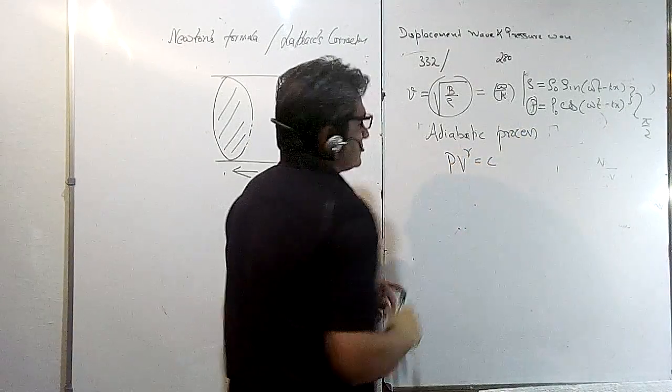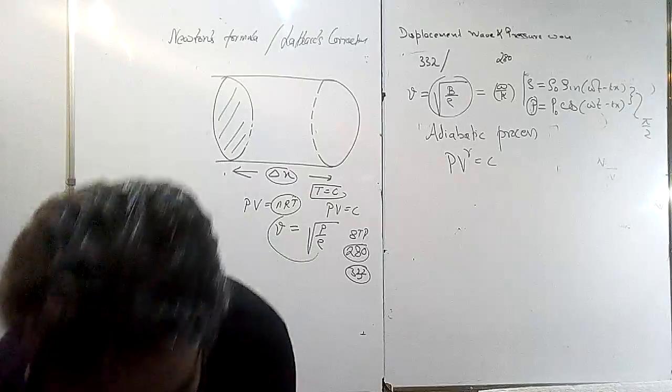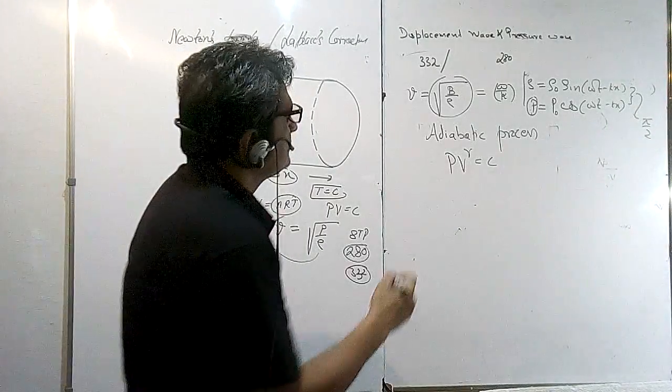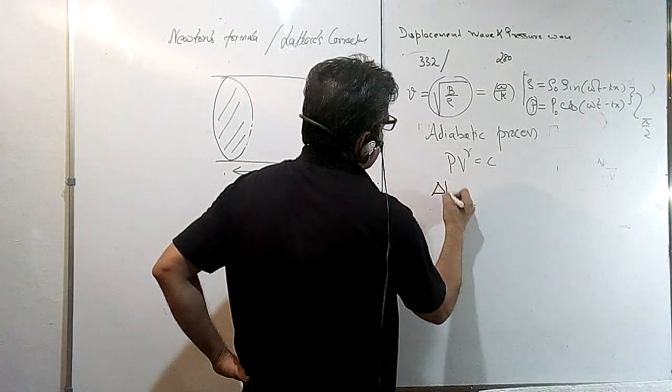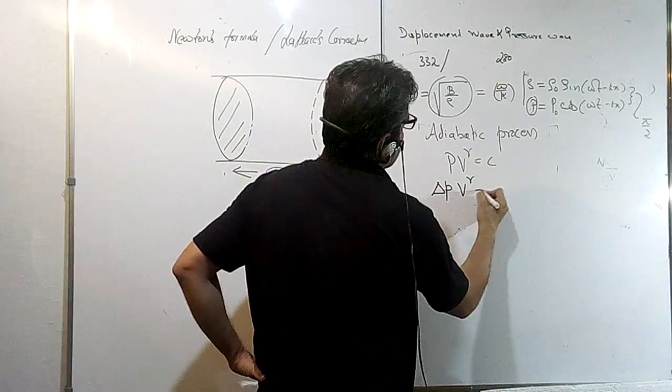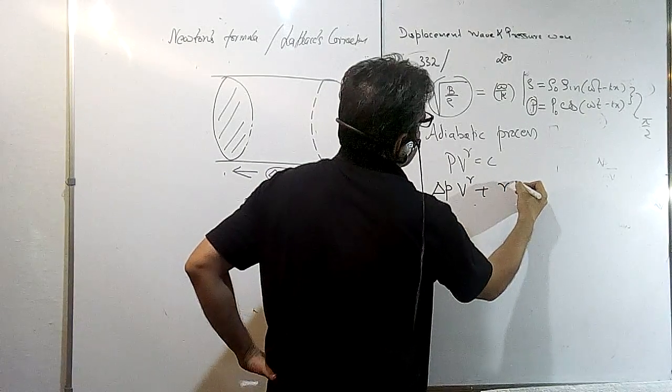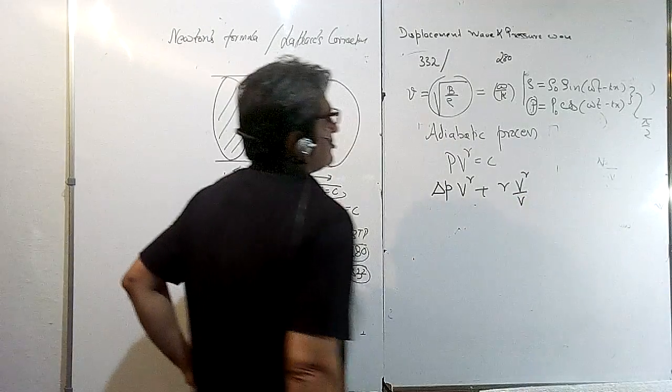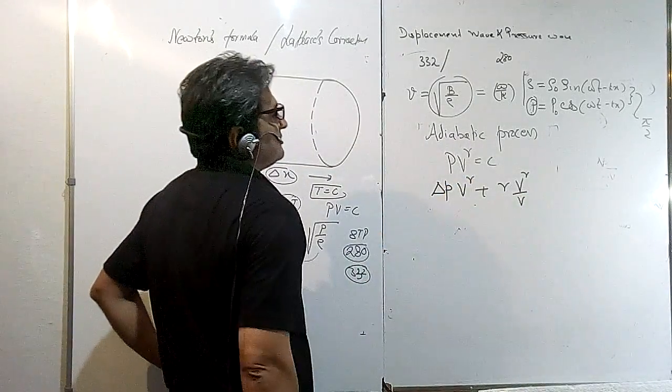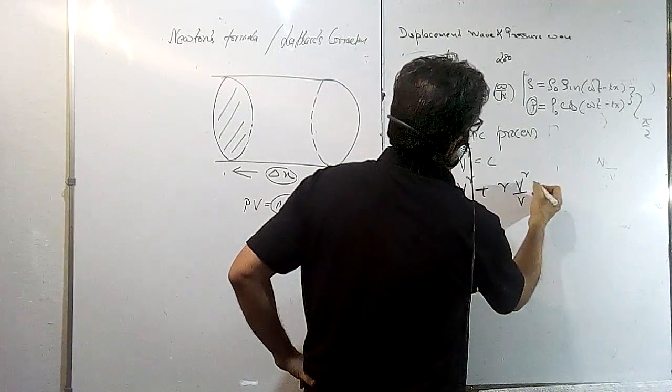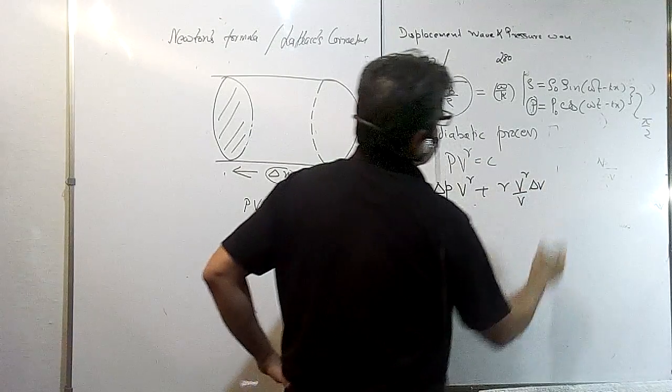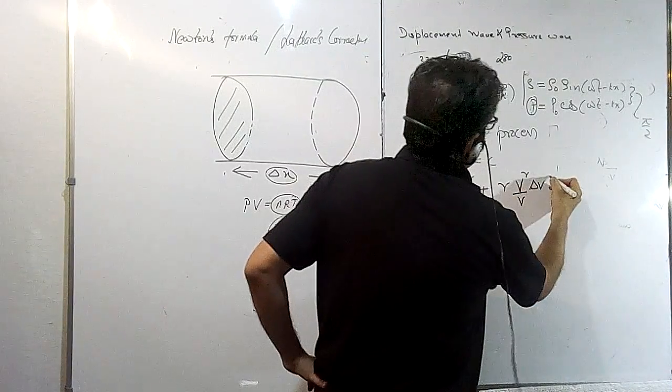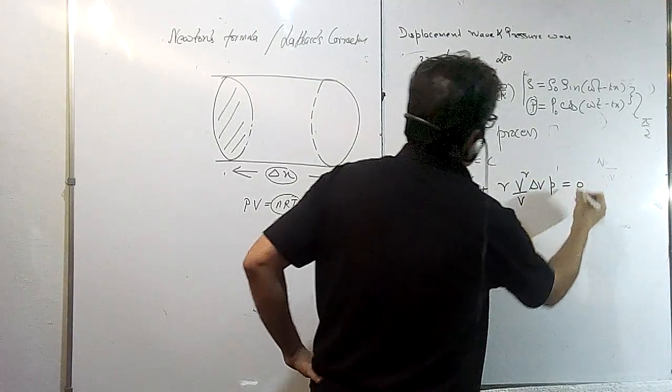Now let us differentiate this. So we get ΔP·V^γ + γ·V^(γ-1)—I can write it like this instead of writing as γ minus 1—into ΔV into P as 0.